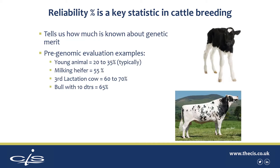When we look at bulls, a typical bull with 10 daughters would get a reliability of around 65%. Once the bull has more daughters coming into his proof then that would move up. 50 daughters would be around 85% — this would be the equivalent of the old first crop proof. And then really to get anywhere near 99%, the highest reliability we can get, the bull needs to get up to thousands of daughters, such as a Pixton Shuttle down here on the right for example.